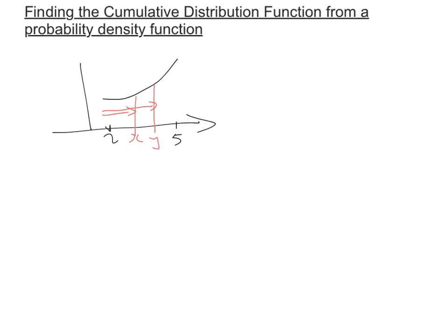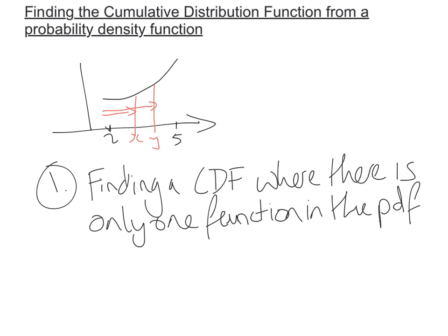These can get pretty complicated, so I'm going to do two examples of different types. The first example is where there is only one function in the PDF. The second example is where there is more than one function in the PDF, which can be a lot more complicated and there's more room for error on those ones.